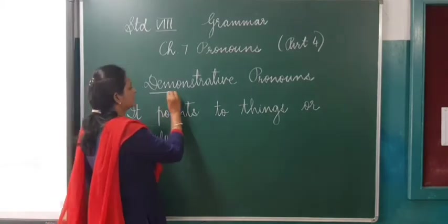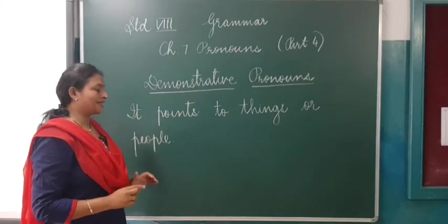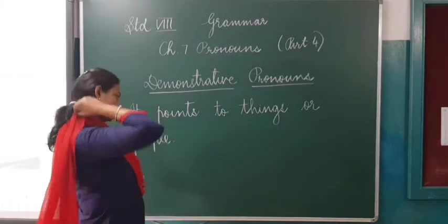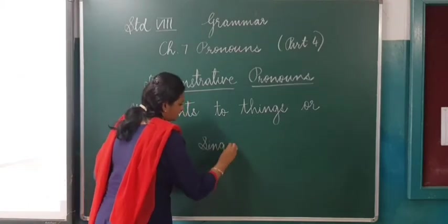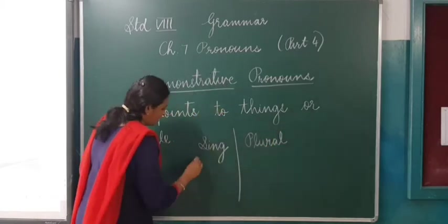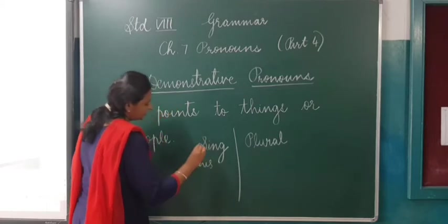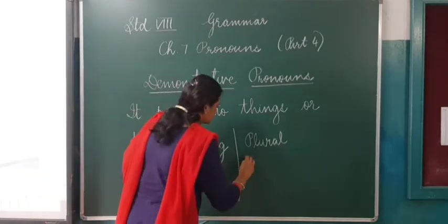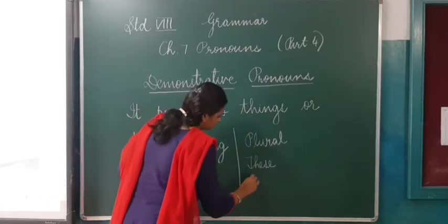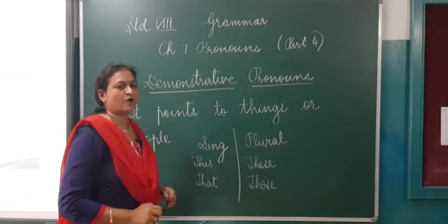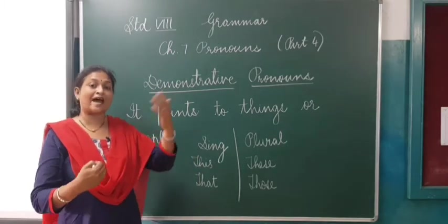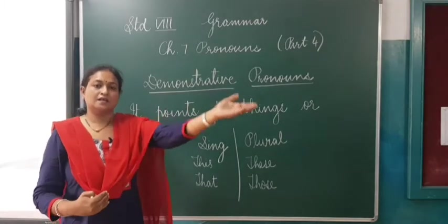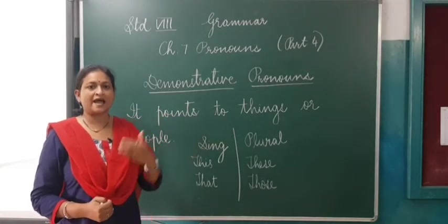Now this is demonstrative pronouns. What is demonstrative? It points to things or people — so whenever we point out something, we call it demonstrative. Demonstrative pronouns have singular and plural forms. 'This' is singular, 'that' is also singular. The plural of 'this' is 'these,' and the plural of 'that' is 'those.' Children, you may remember: 'this' is for near and 'that' is for far. Whenever we are pointing out anything which is near to us, we call it 'this,' and if that thing is a little far from us, we call it 'that.'